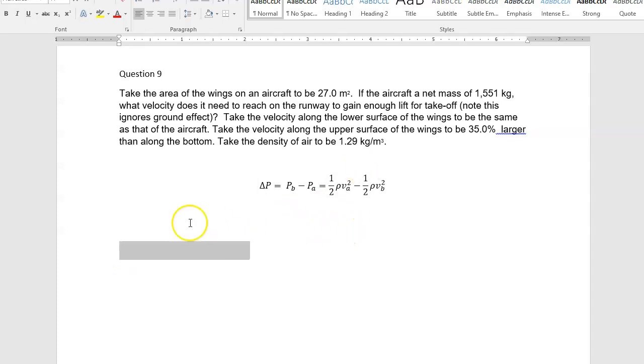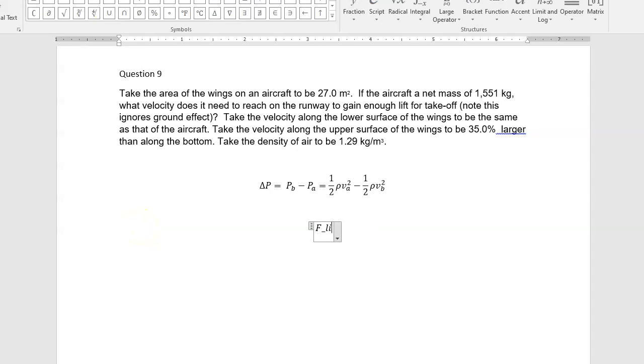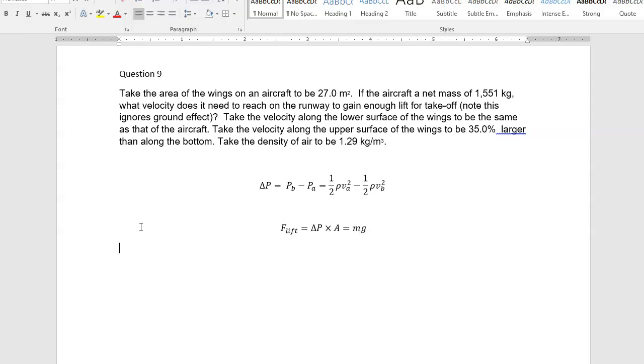And so the lift force that we're after, we want that to be delta P times the area of the wing, which just needs to be equal to mg so that you're just at the point where you can lift off.